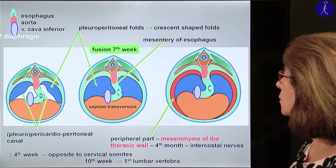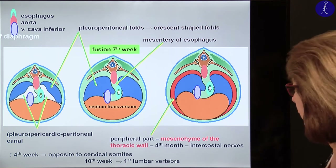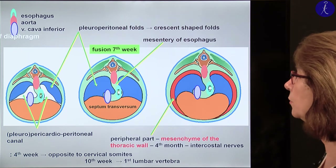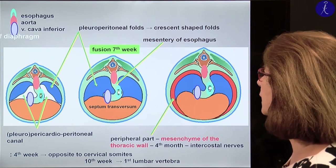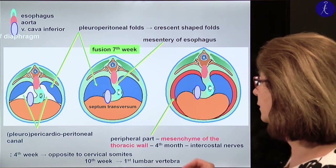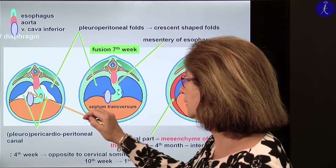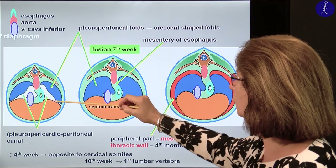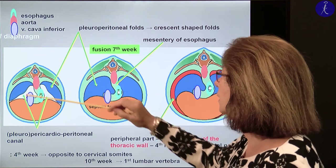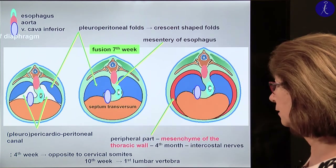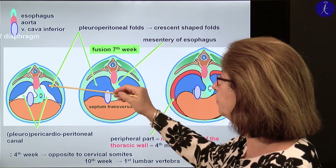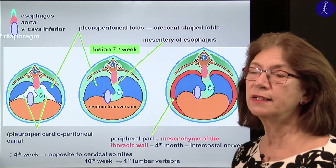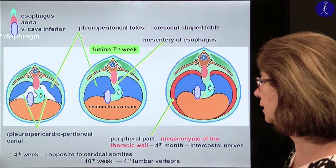How is the formation of the diaphragm completed? We have this pleuropericardial peritoneal canal, which is yet open. From the posterior body wall, a crescent-shaped fold will grow in — this is the pleuroperitonal fold. The pleuroperitonal fold separates the final pleural cavity from the peritoneal cavity.